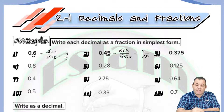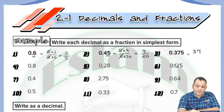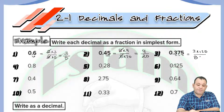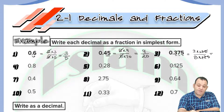For 0.375, write 375 as the numerator. Because we have three digits to the right of the decimal, we have three zeros in the denominator, so it will be over one thousand. We know that 375 equals three multiplied by 125, and 1000 equals eight multiplied by 125. We can cancel out 125 with 125, so the number in simplest form is three over eight.